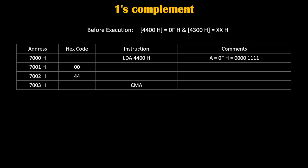Then at 7003h we write the instruction CMA. CMA stands for complement accumulator — it takes the complement of the content of the accumulator, meaning every 1 gets replaced by 0 and every 0 gets replaced by 1. Before execution of this instruction the accumulator was 0Fh. After taking the complement of 0Fh, the 4 zeros become 4 ones and the 4 ones become 4 zeros, giving us F0h in the accumulator.